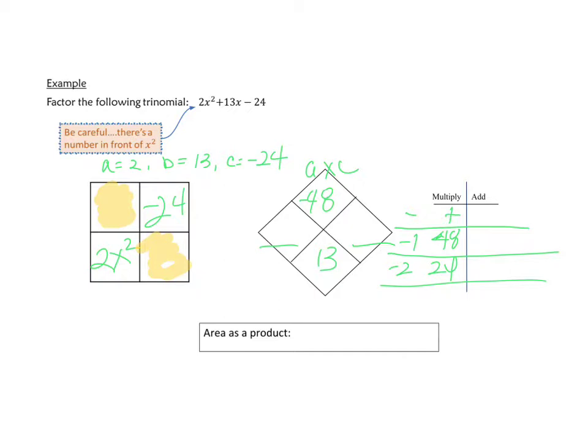Negative 3 times 16 is negative 48, and if you add them together, you get 13. These are our numbers.